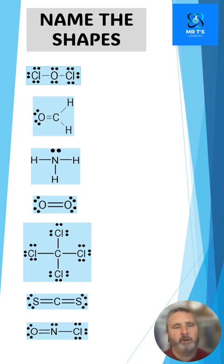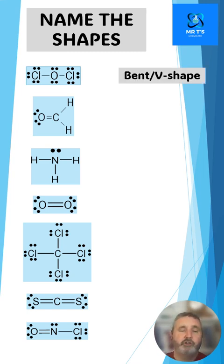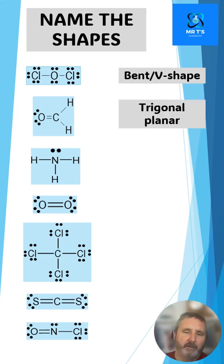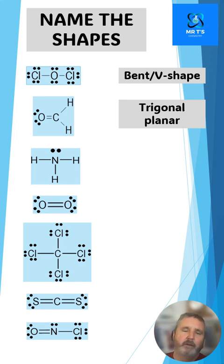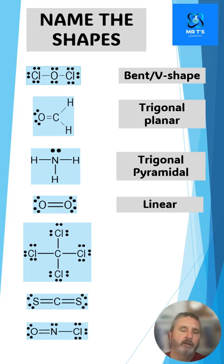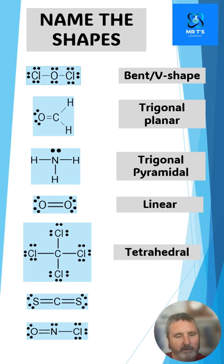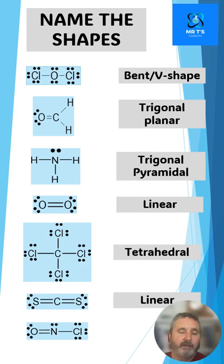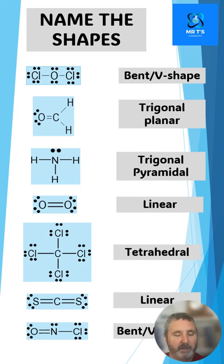The first molecule is bent or V-shaped. The second one is trigonal planar. The third one has four regions, three of them bonding — trigonal pyramidal. If we just have two atoms bonded to each other, the only shape we can get is linear. The next shape has four regions all bonding — tetrahedral. The sixth shape has two regions pushing away from each other as far as possible — linear. And the last one has three electron density regions but only two are bonding, so this is bent or V-shaped.